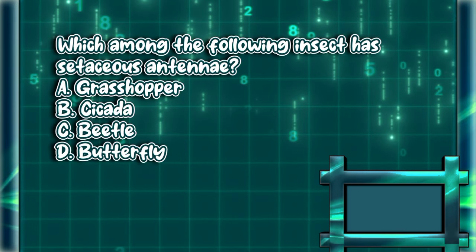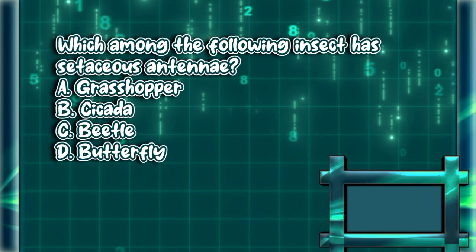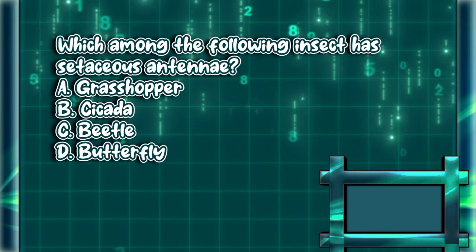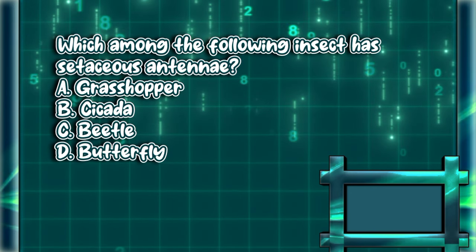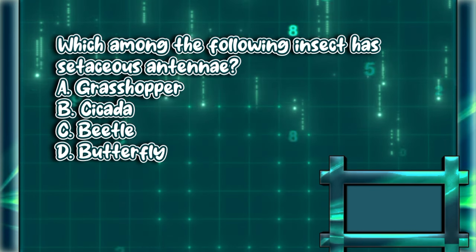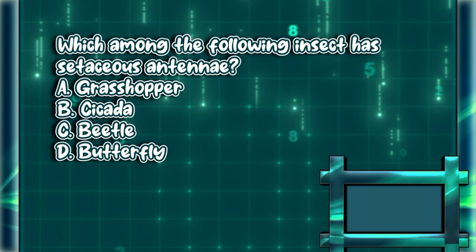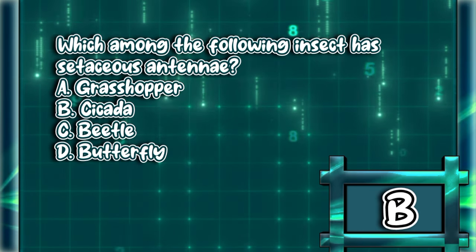Which among the following insects has setaceous antennae? A. Grasshopper. B. Cicada. C. Beagle. D. Butterfly. The answer is letter B.